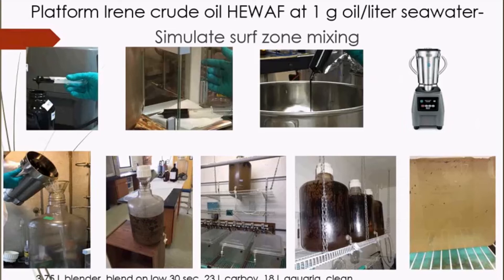The idea of preparing this in a blender is to simulate surf zone mixing — following a spill, oil would be in the surf zone, and we're trying to incorporate a representative amount of oil into seawater. We prepare multiple batches of HEWAF in the blender and pour each batch into a 23-liter carboy until it's full. For our exposures, we need one carboy per aquarium — we have three aquaria for three replicate concentrations, so we need three carboys.